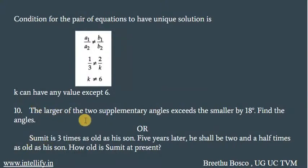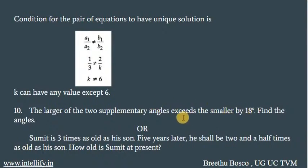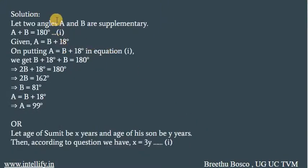The second option for question 10: the larger of two supplementary angles exceeds the smaller by 18 degrees — find the angles. If the two supplementary angles are A and B, then A + B = 180 degrees. The larger one exceeds the smaller one by 18 degrees, so A = B + 18.